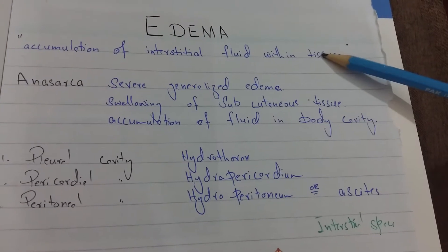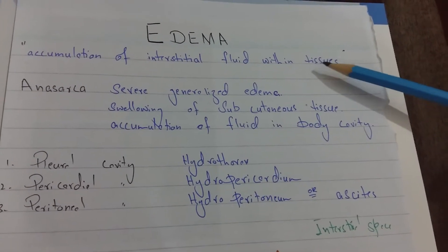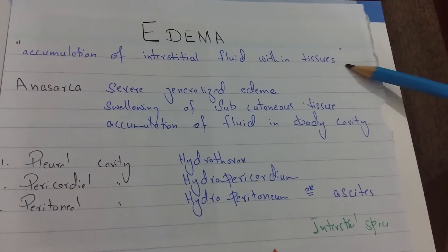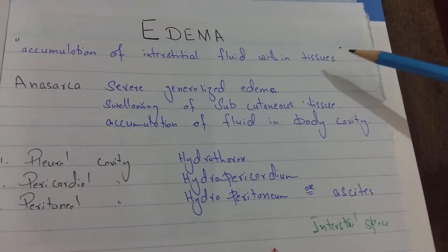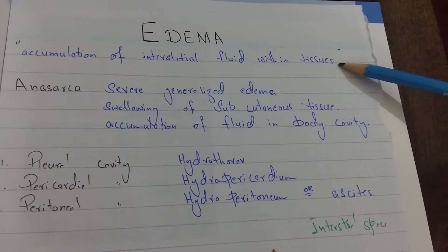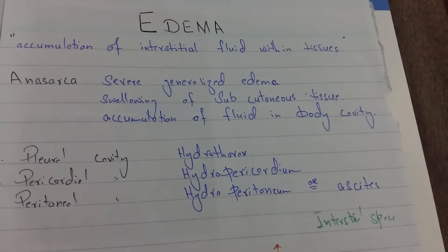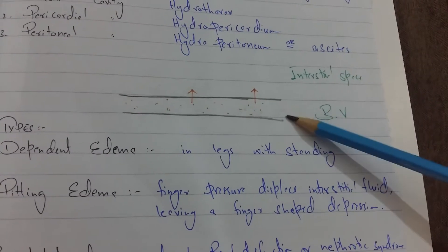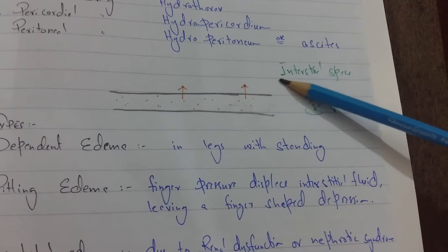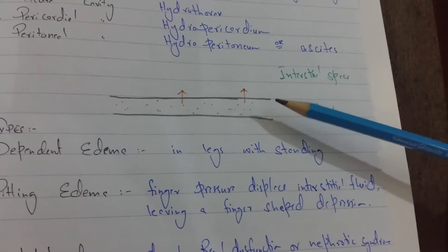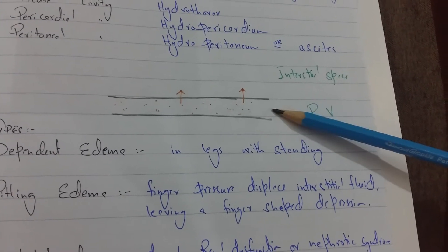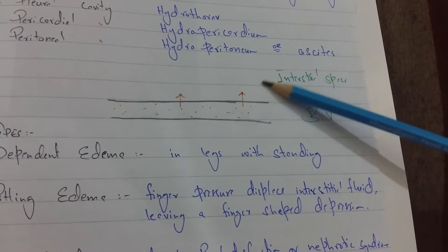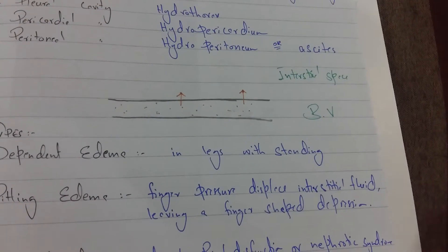Basically, edema is the accumulation of interstitial fluid within tissues. In simple words, the swelling due to the accumulation of fluid is known as edema. As seen in this diagram, this is a blood vessel and this is interstitial space. When any blood vessel or capillary leaks fluid into the interstitial space, the area expands and causes swelling. This is known as edema.